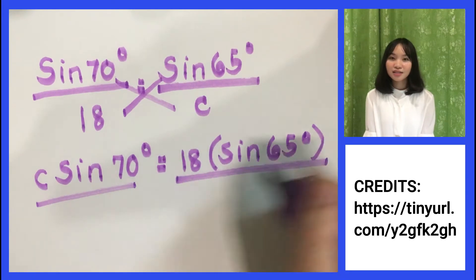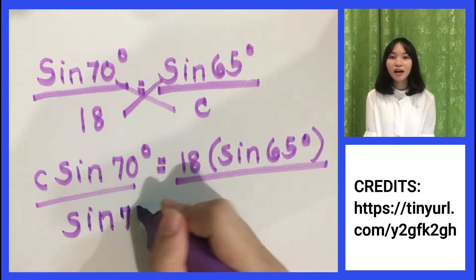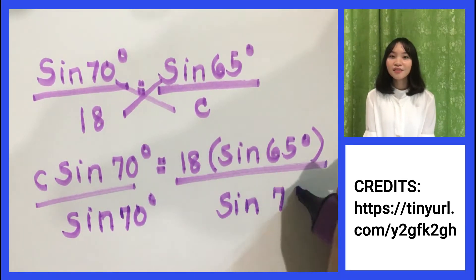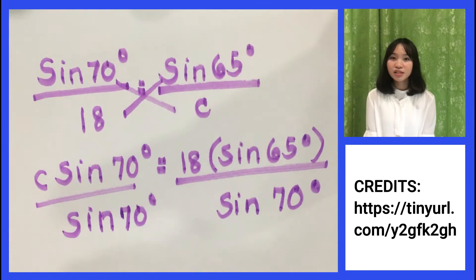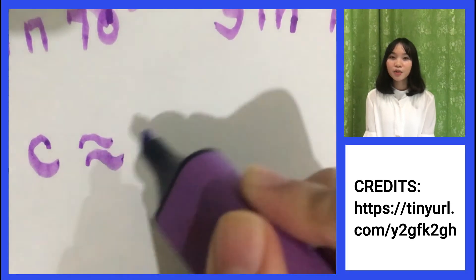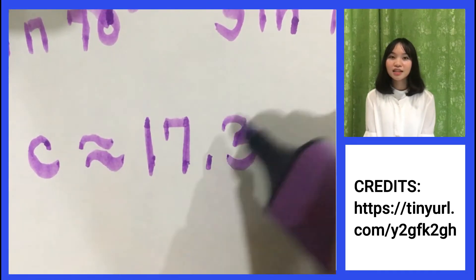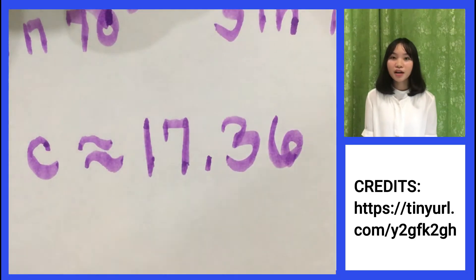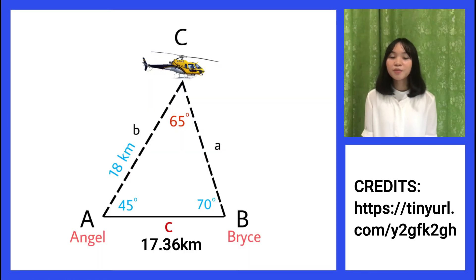The last step is to simplify the equation. We will have C times sin 70 equals 18 times sin 65. Next, we need to isolate C. To isolate C, we will divide sin 70 on both sides. Thus, C is approximately equal to 17.36. Therefore, Angel and Bryce are approximately 17.36 kilometers away from each other.